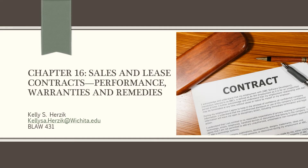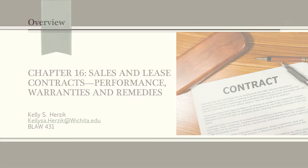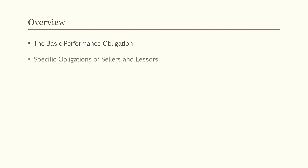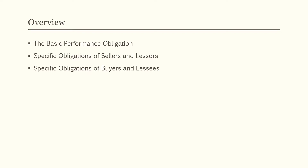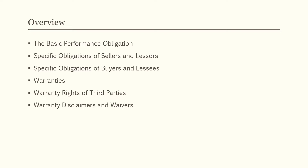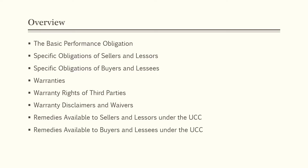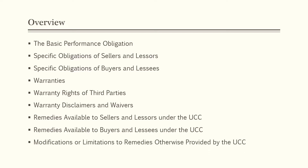Chapter 16: Sales and Lease Contracts — Performance, Warranties, and Remedies, presented by Kelly Herzig. In this chapter we will discuss the basic performance obligation, specific obligations of sellers and lessors, specific obligations of buyers and lessees, warranties, warranty rights of third parties, warranty disclaimers and waivers, remedies available to sellers and lessors under the UCC, remedies available to buyers and lessees under the UCC, and modifications or limitations to remedies otherwise provided by the UCC.